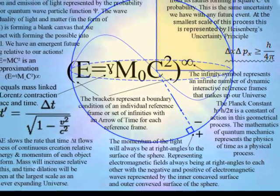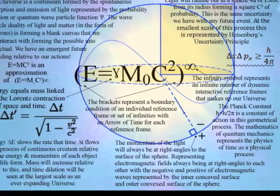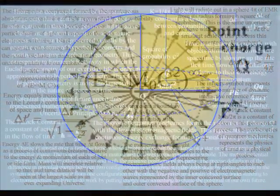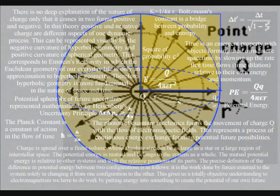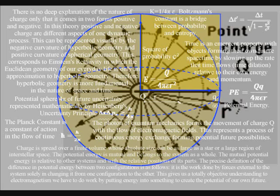The two-dimensional surface of the sphere forms a dynamic boundary condition, with the inner concave surface and the outer convex surface giving us a geometrical reason why charge comes in two types, the positive and negative.